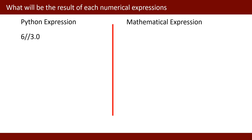Next, the Python expression is 6 // 3 — two forward slashes, which shows floor division, meaning 6 divisible by 3. It will give me the answer using floor division. In this case the answer is 2. Even if the result were 2.5, floor division would give me 2.